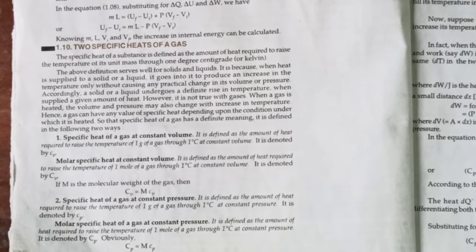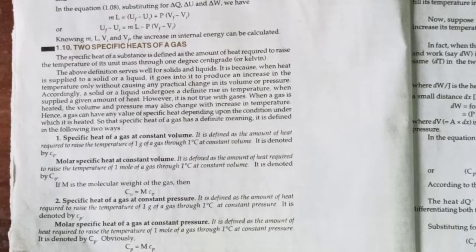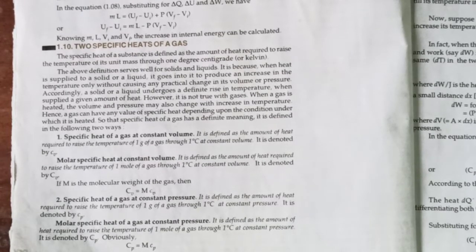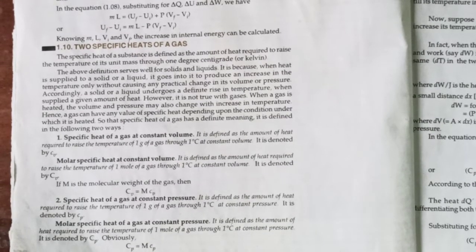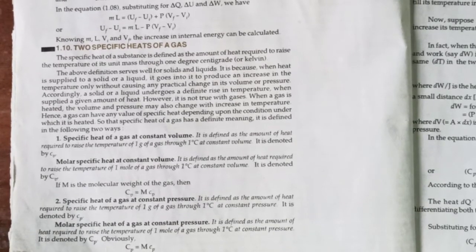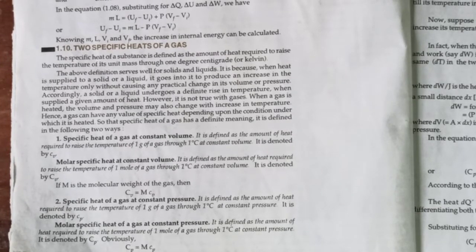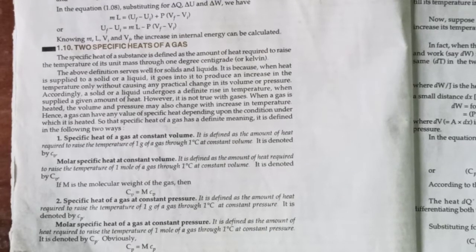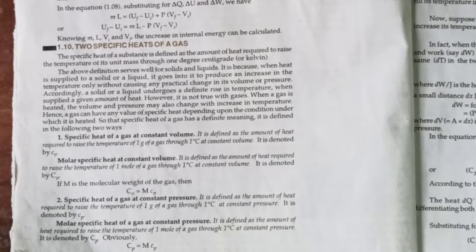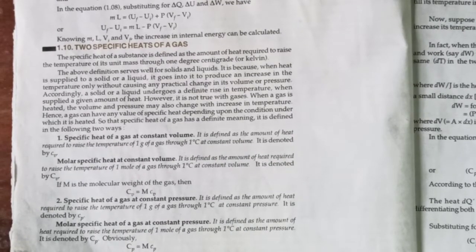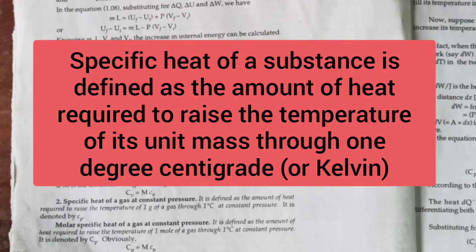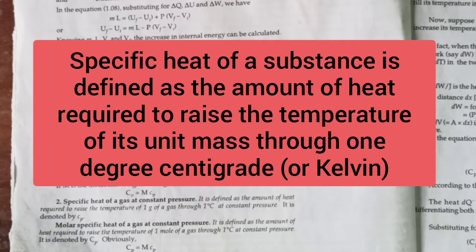Now we are going to talk about specific heats of gas under thermodynamics, the first law of thermodynamics, in unit 8. I'm also going to derive the expression for the relation between two specific heats of gas — that means specific heat of a gas at constant volume and specific heat of a gas at constant pressure. First of all, what is specific heat? Specific heat of a substance is defined as the amount of heat required to raise the temperature of its unit mass by one degree centigrade.